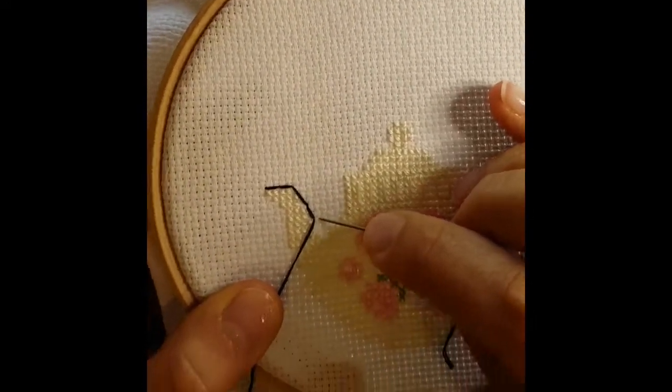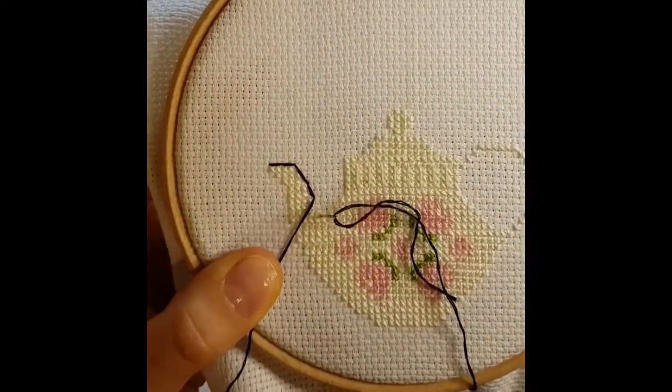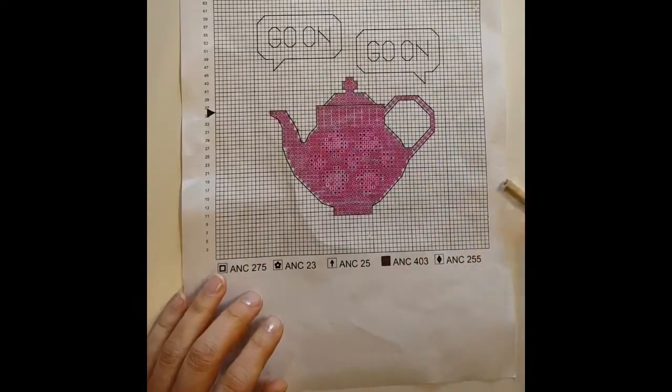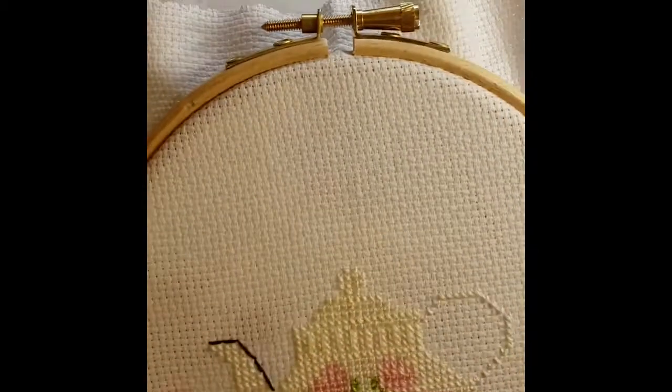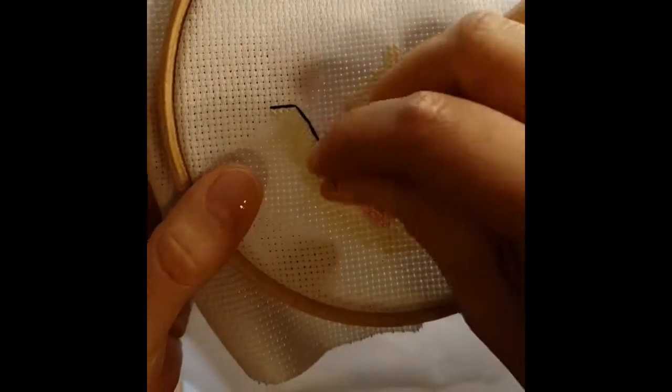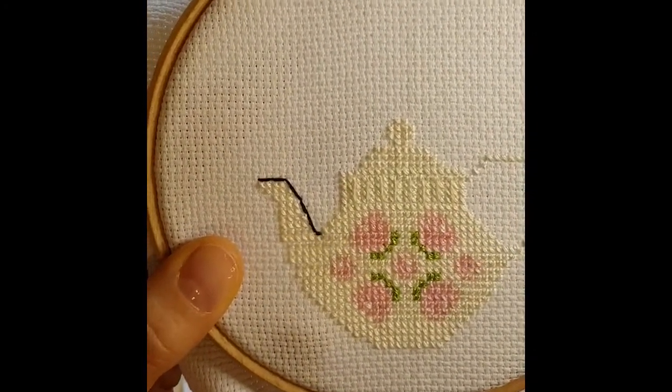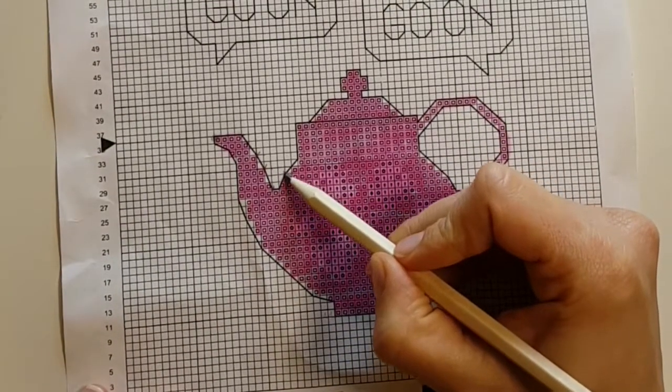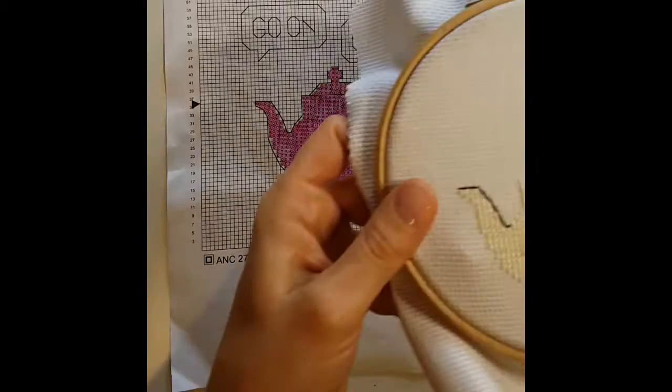So one across, one, two, three down. Next up, we only have one stitch, one square. Come up from behind. One. This one is going to go here. So we're going to go one, two and one.